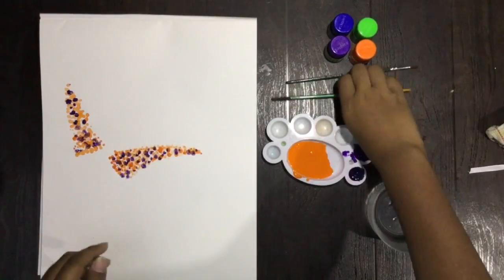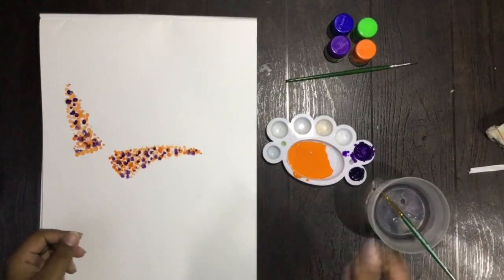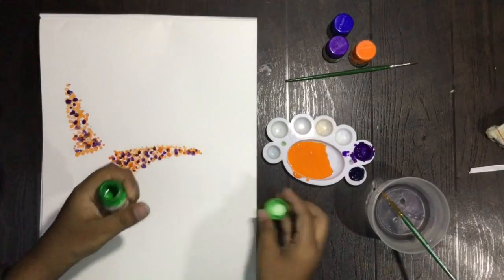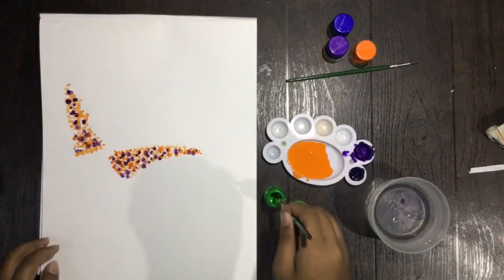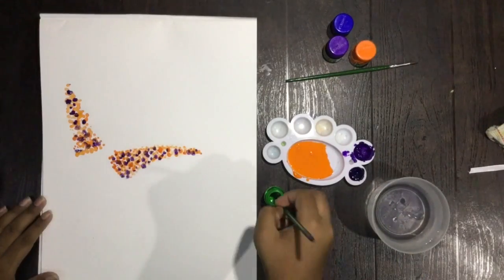So now we'll take a paintbrush, dip it inside water, and we'll take a green color paint like this. Keep it over here. Now we'll make the stem.